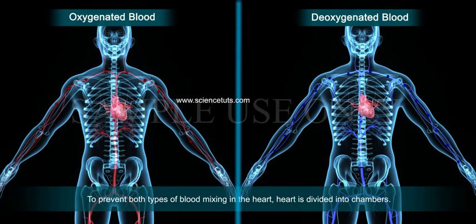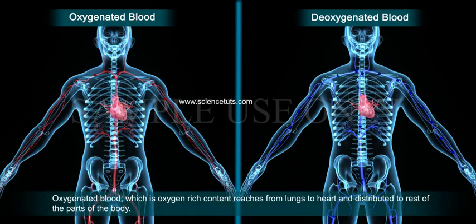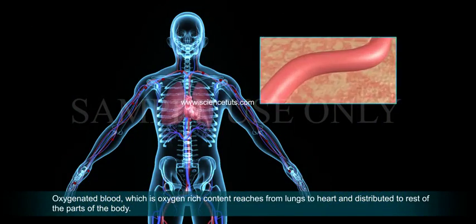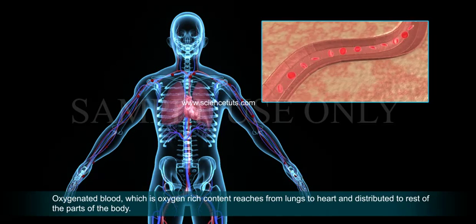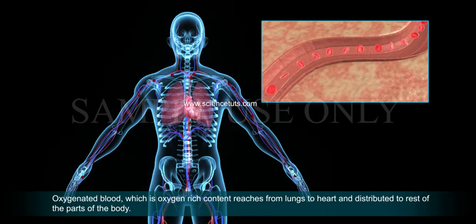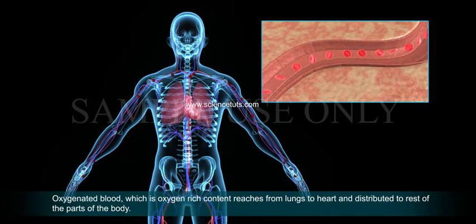To prevent both types of blood from mixing in the heart, the heart is divided into chambers. Oxygenated blood, which is oxygen-rich, reaches from the lungs to the heart and is distributed to the rest of the parts of the body.